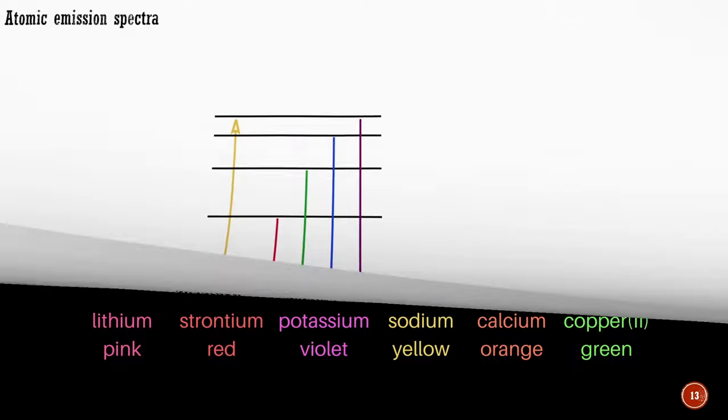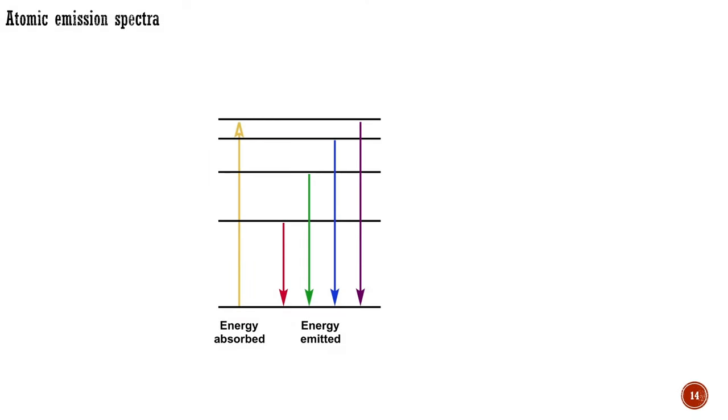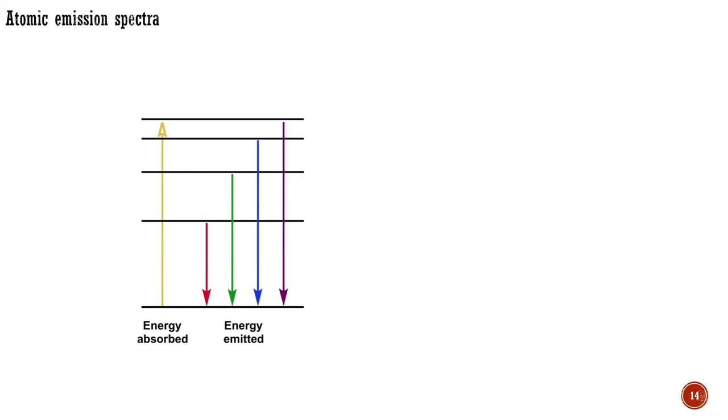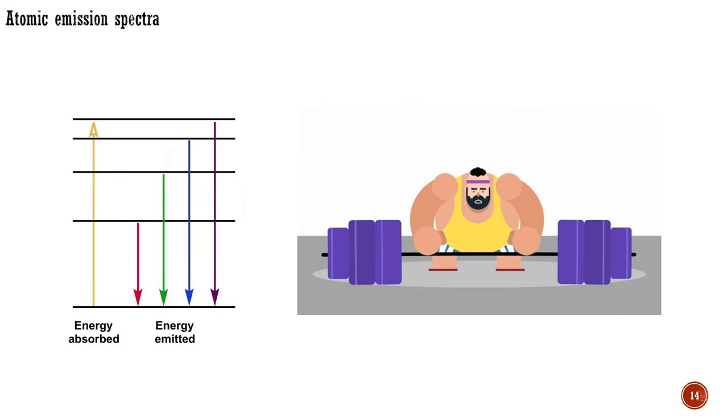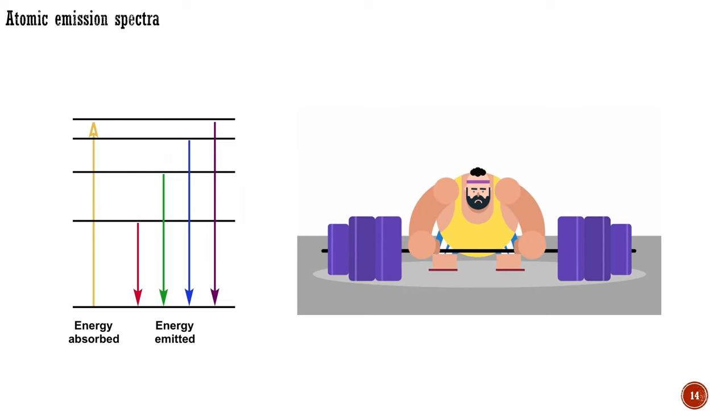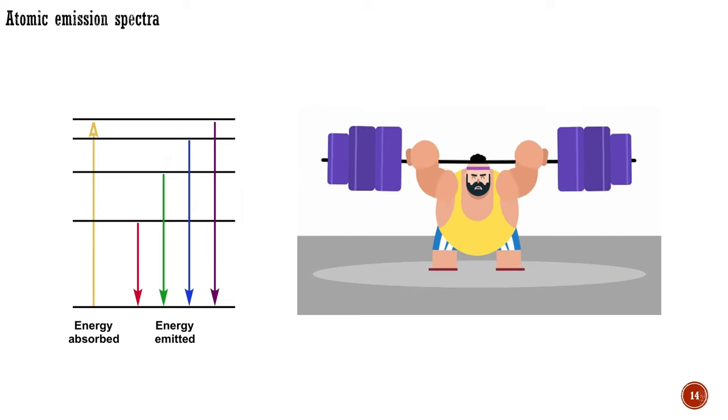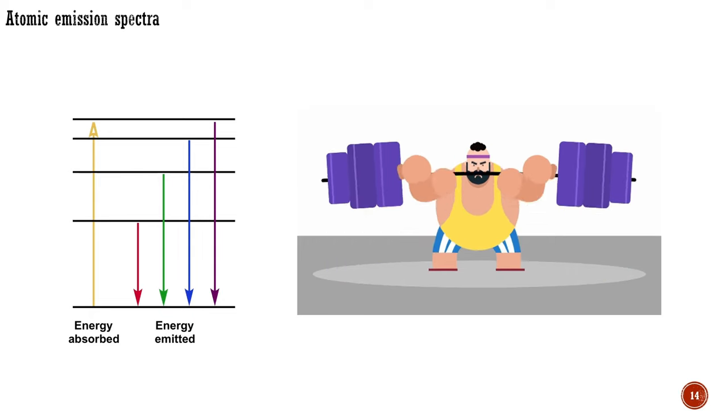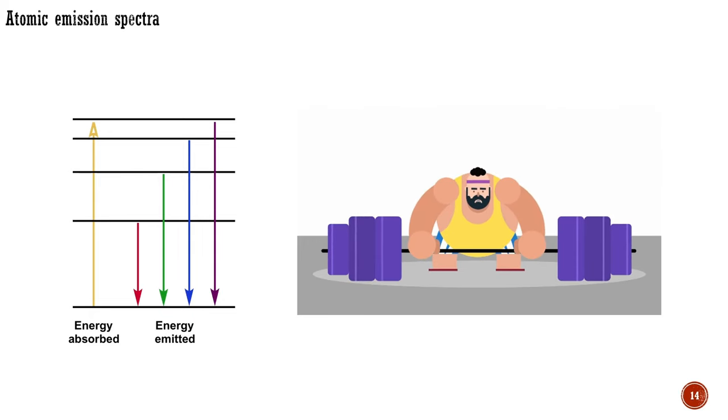The energy supplied causes an electron to move from a lower energy state to a higher energy or excited state. As it drops back down, light is emitted. The process is a bit like a weightlifter lifting a heavy weight. He can hold it above his head with straight arms, but sooner or later, he will drop it, and the weight will fall to the ground, releasing energy with a crash, if not a broken toe.